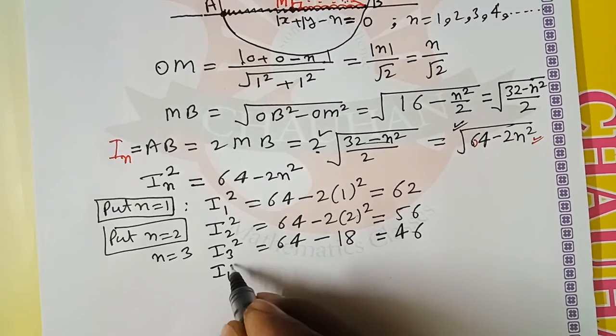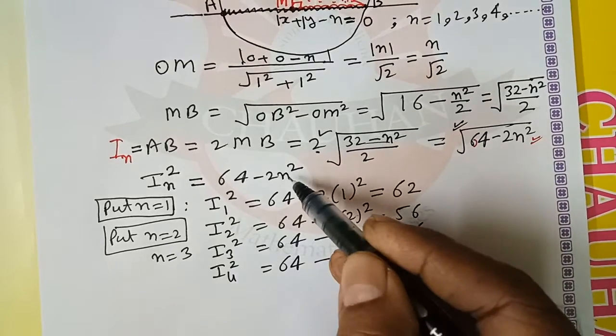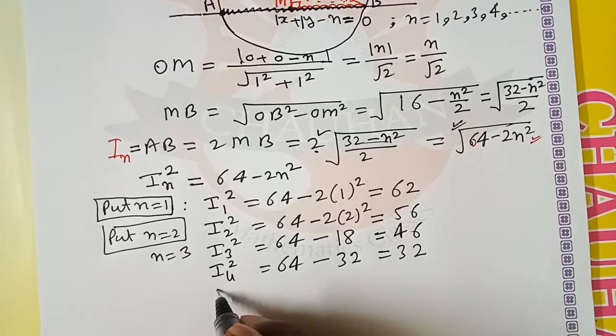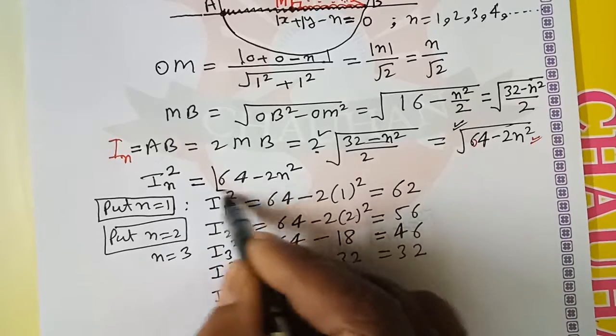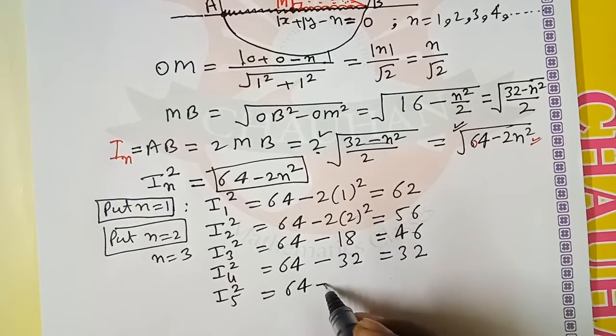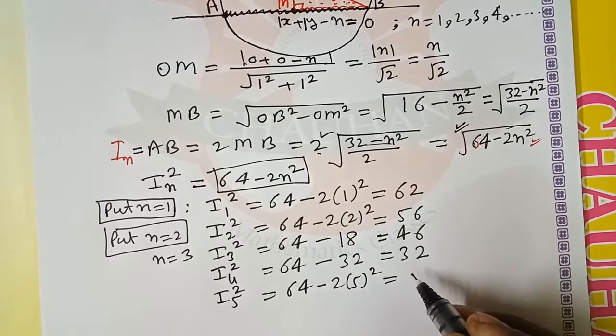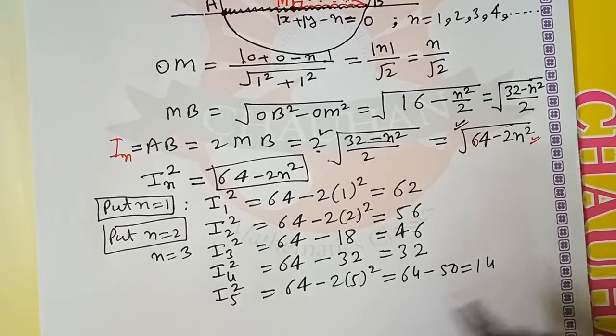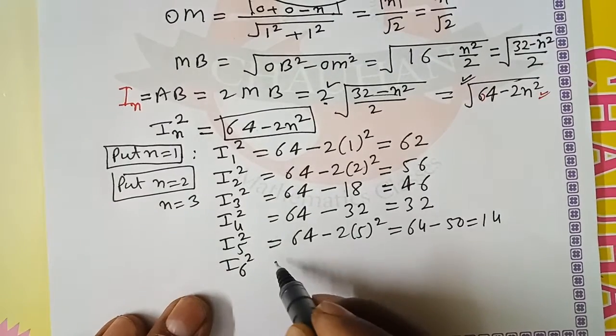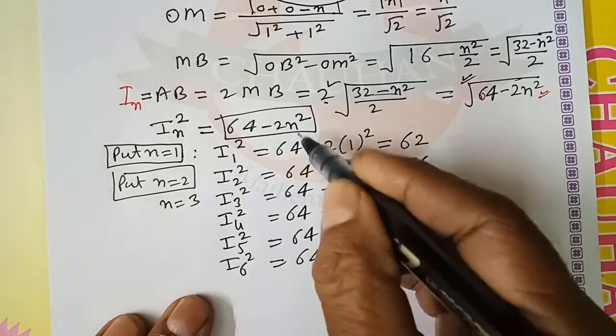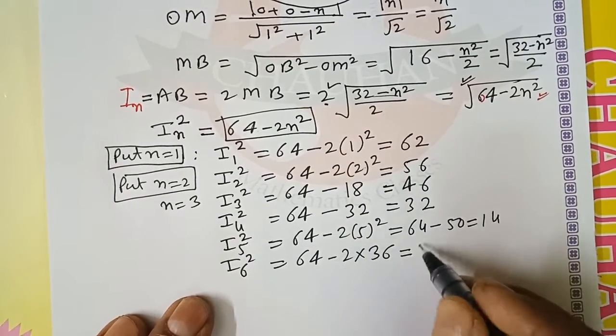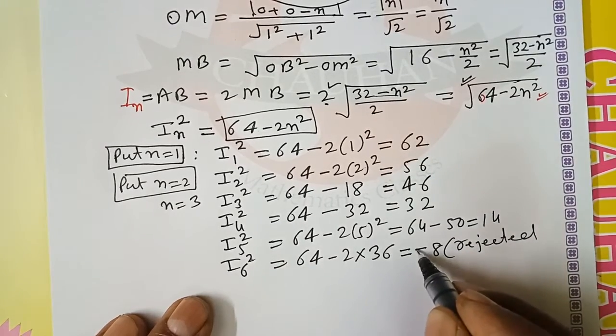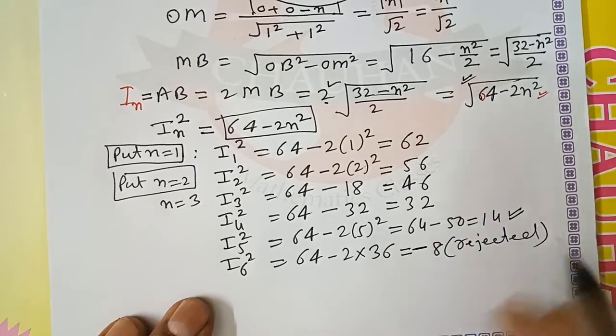Similarly, try i₄ squared, i₅ squared using the same formula. i₅ squared equals 64 minus 2 into 5 squared, which equals 14. And i₆ squared: 64 minus 2 into 6 squared equals minus 8. From here onwards it's not possible, rejected, because square of intercept cannot be negative. So rejected as unsuitable.